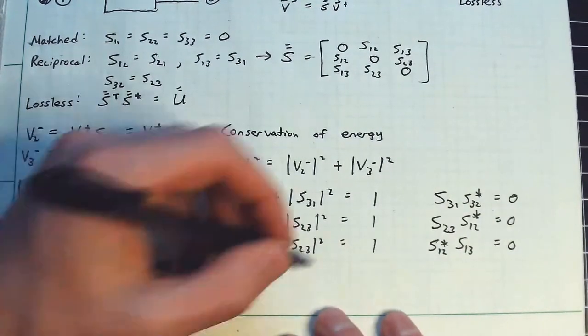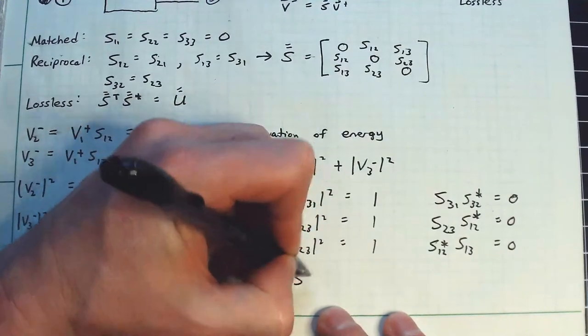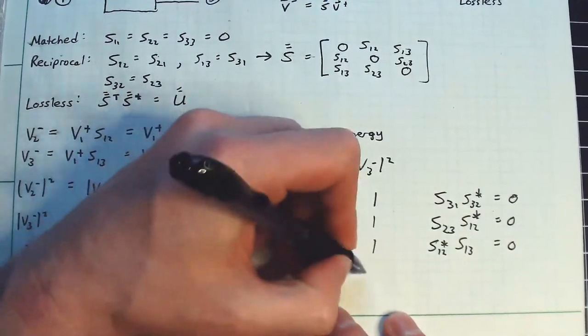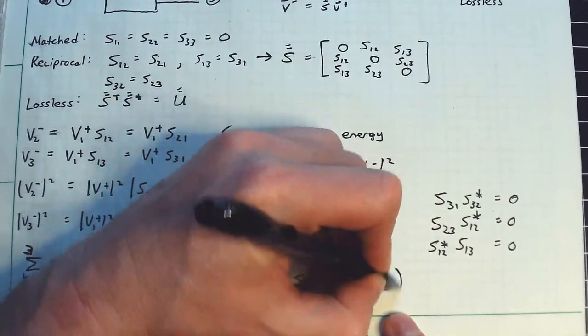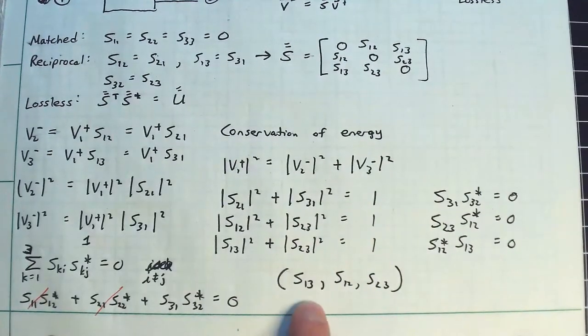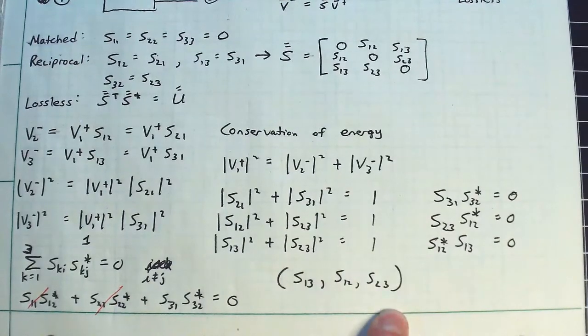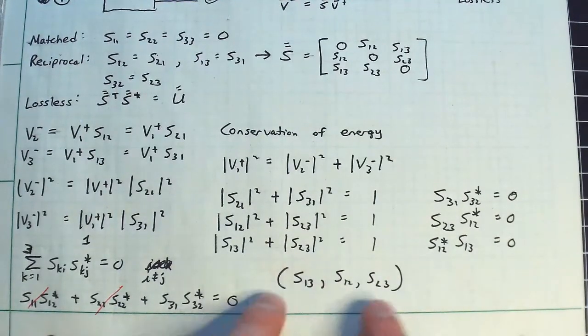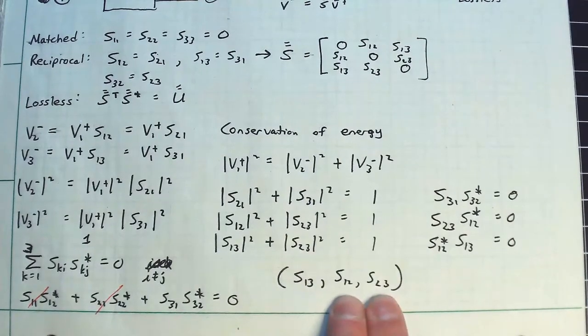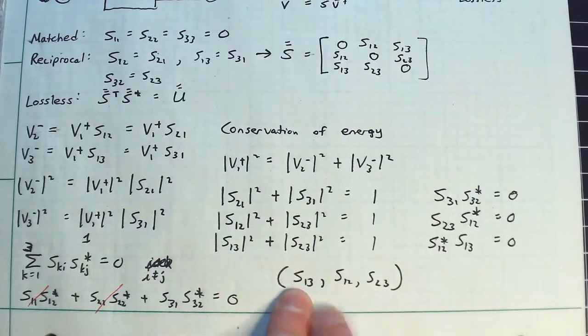So what you do is you look at the triplet here. I've got S13, S12, and then S23. And remember the order of the indices doesn't matter. Two out of these three must be zero. So I can either have zero and zero, not zero, or I can have zero, zero, not zero, or zero, zero, and not zero.